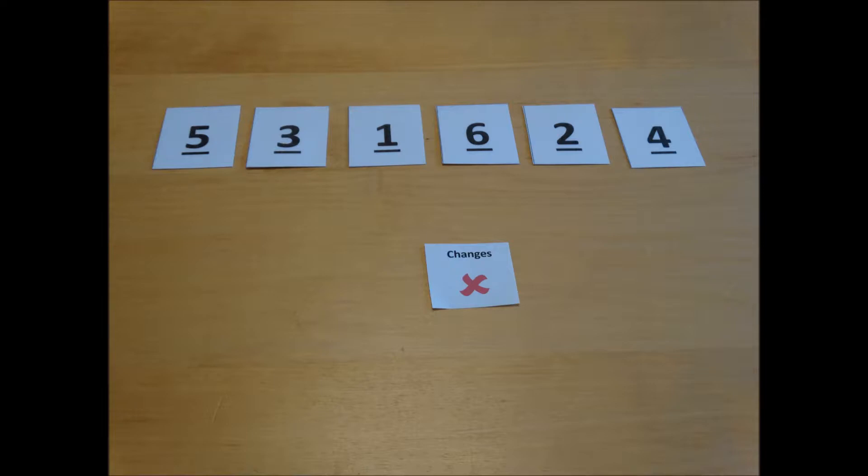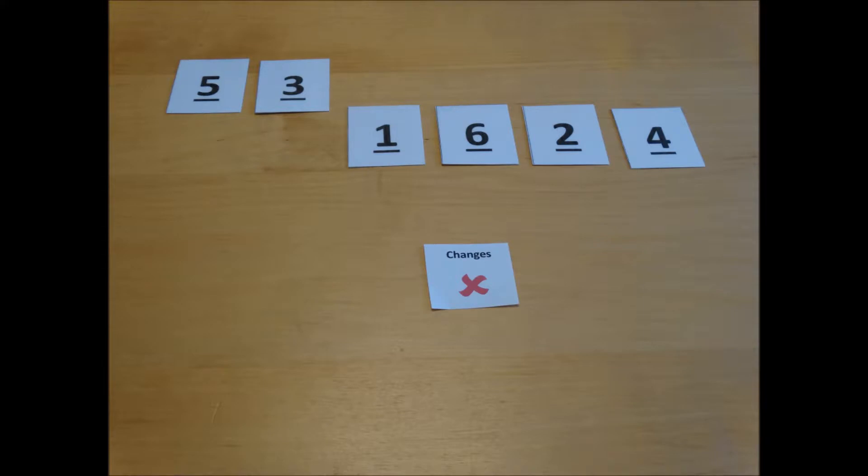To perform our bubble sort we need to look at the first two numbers of the array. In this case that is 5 and 3. We need to swap the numbers if they're in the wrong order.